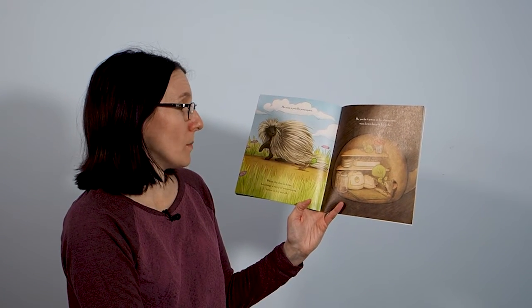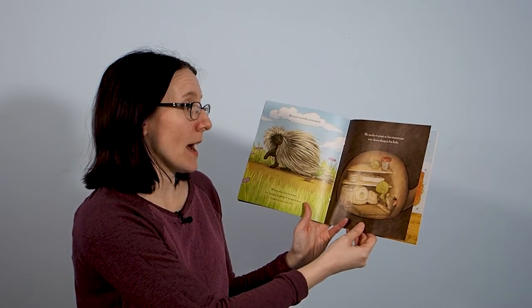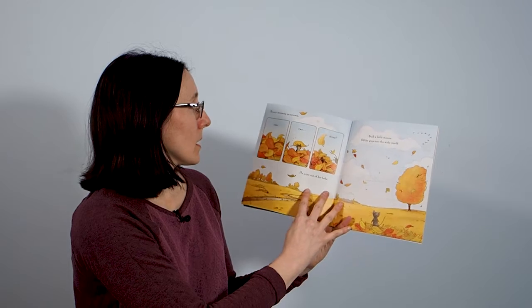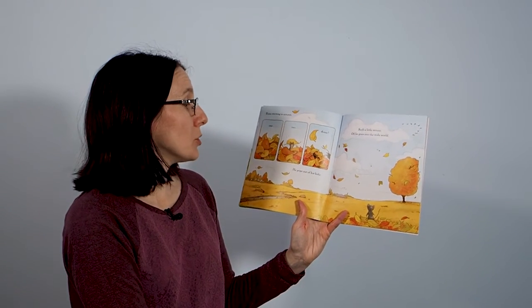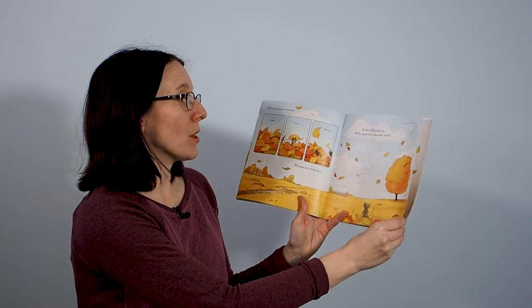And when the day is done, he brings a sprig of watercress home in his mouth. He packs it away in his storeroom deep deep down in his hole. Every morning in autumn, one two three, he pops out of his hole, such a little mouse.